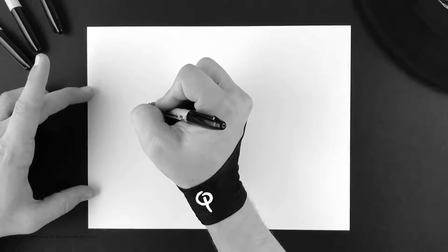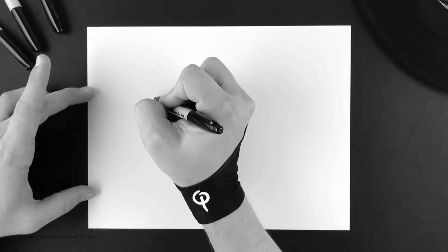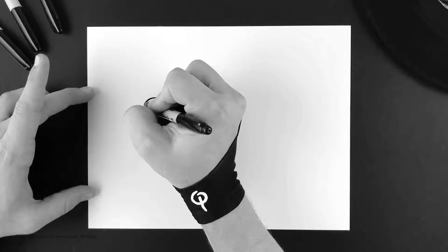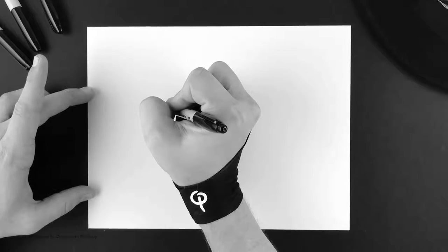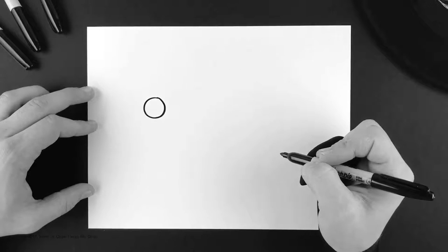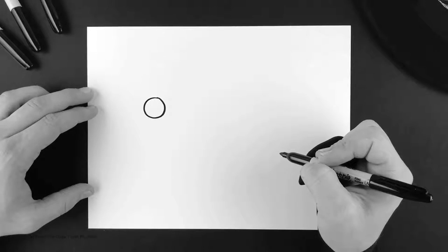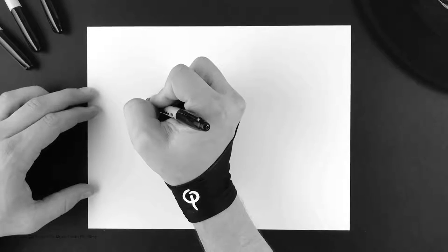let's start off with his eyes. Do your first circle right about there, and then one coming right off it just like that.